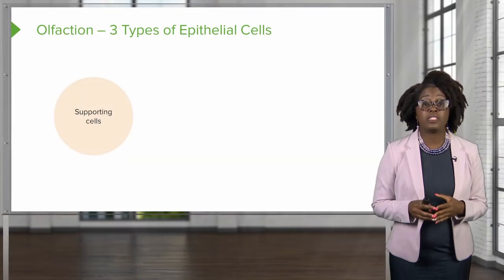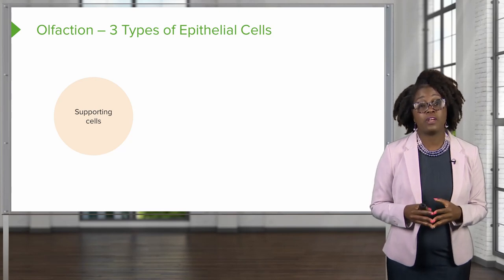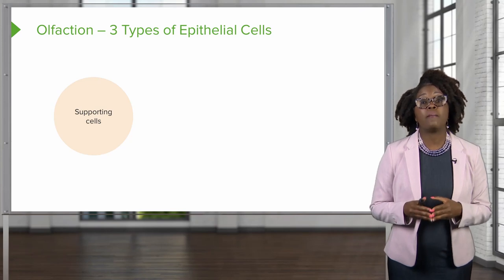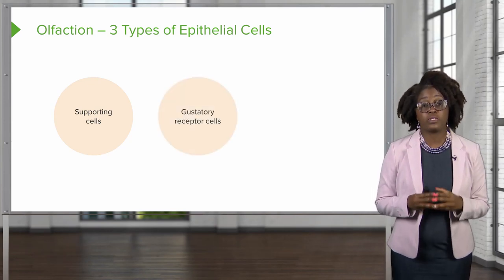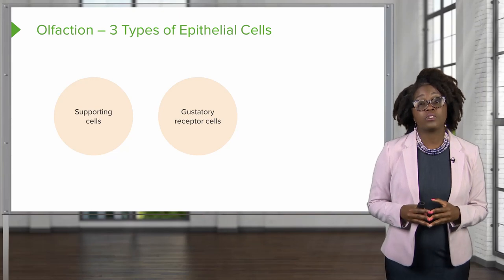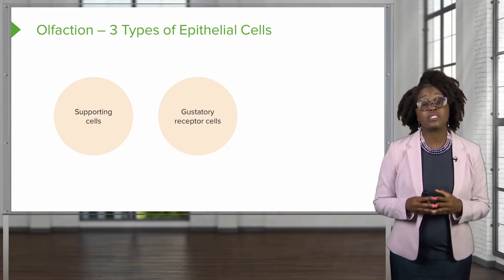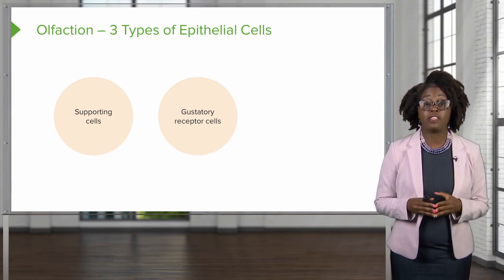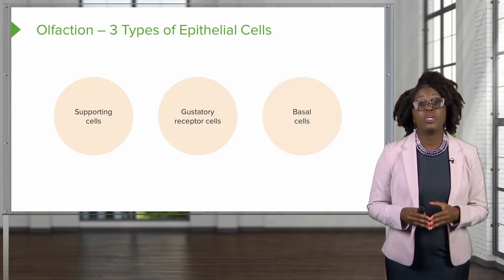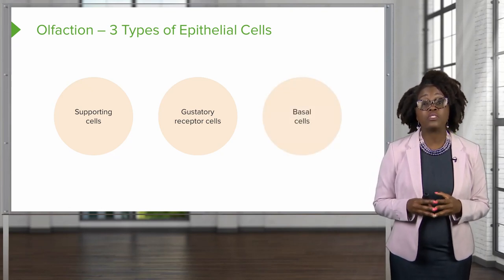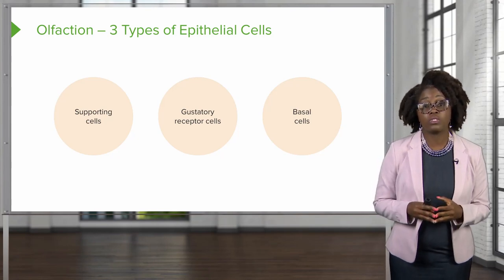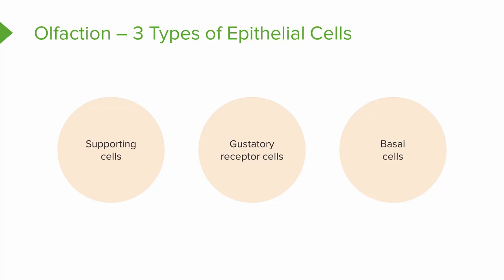The taste buds contain three different types of epithelial cells. We have the supporting cells, which surround about 50 gustatory receptor cells. These cells contain small hairs referred to as gustatory microvilli that project from the taste pore in the taste bud. We also have basal cells, which are stem cells that produce the supporting cells, and the supporting cells will subsequently become our gustatory receptor cells.